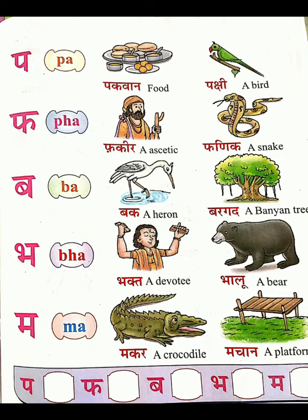BHA, B-H-A. 'Bhaktam' — devotee. 'Balu' — bear. MA. 'Yum' — MA. 'Makar' — crocodile. 'Machan' — a platform. So these are all the words from PA to MA.